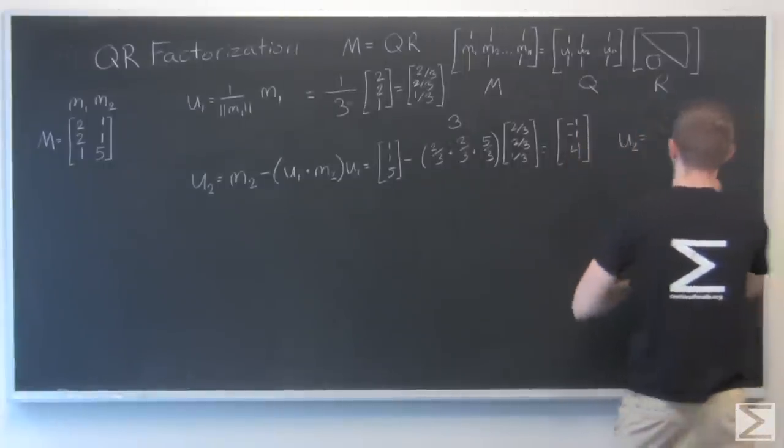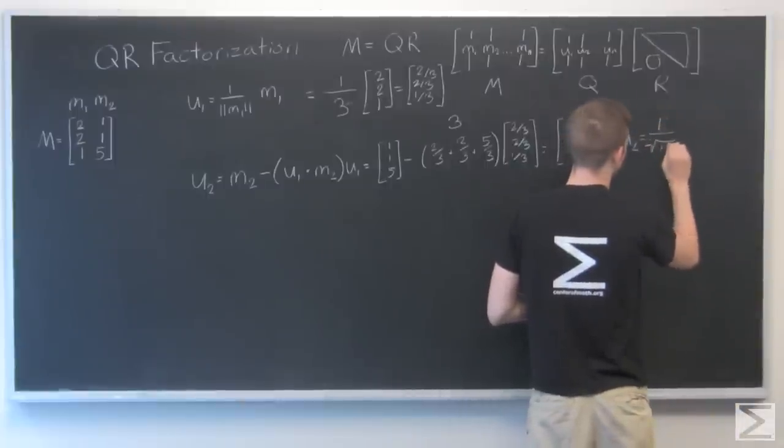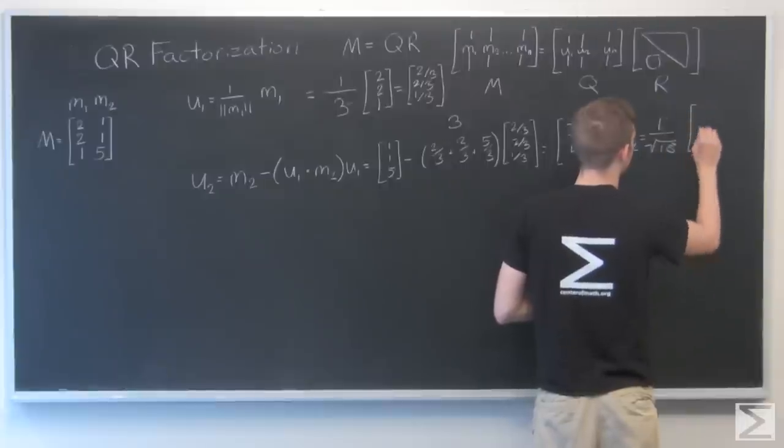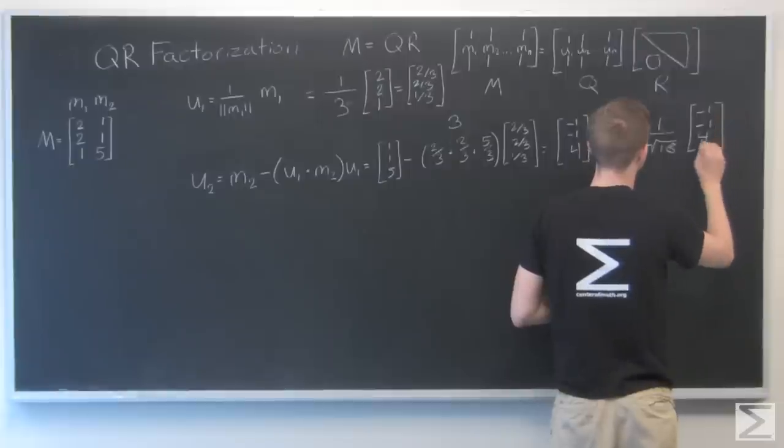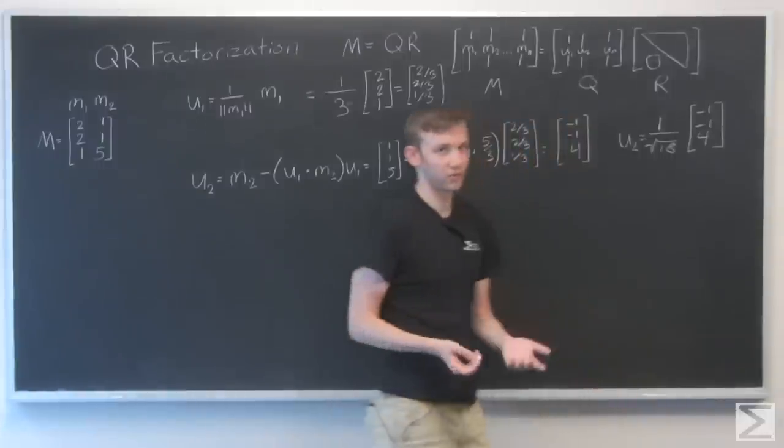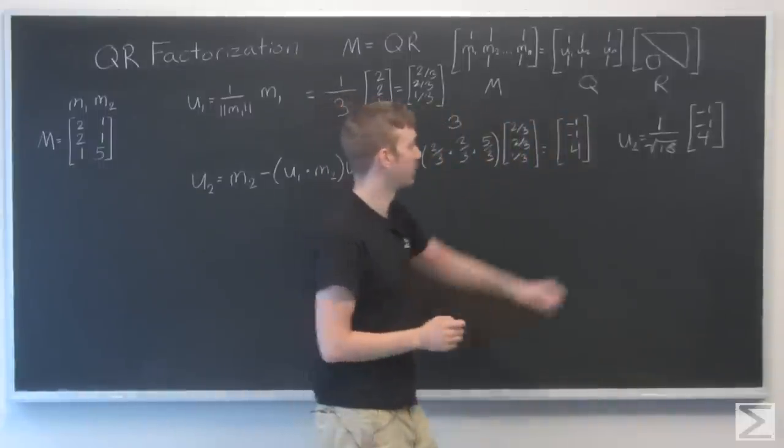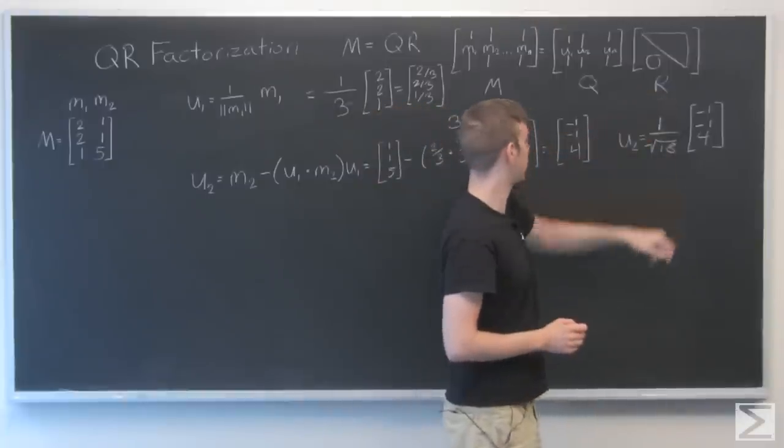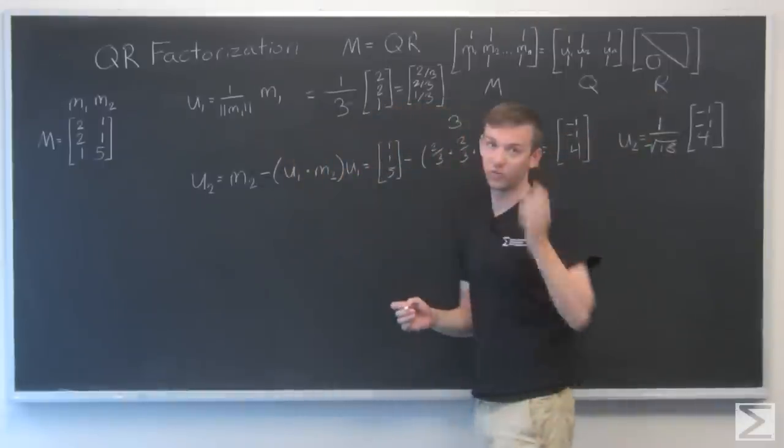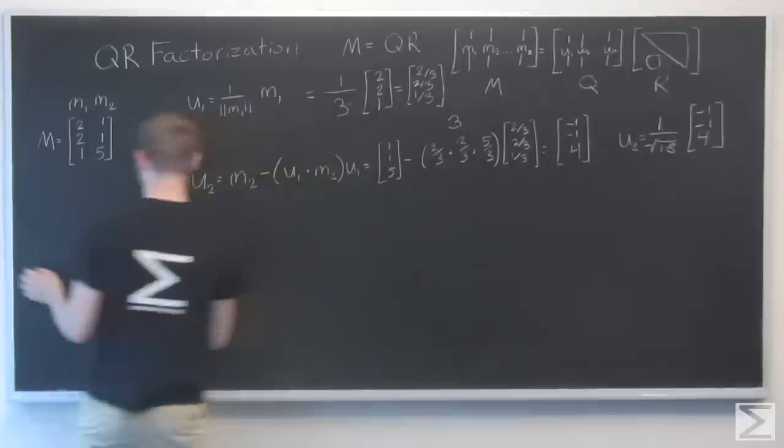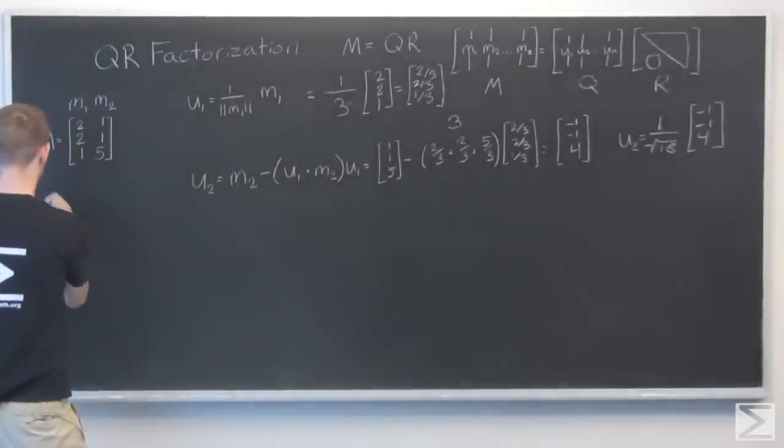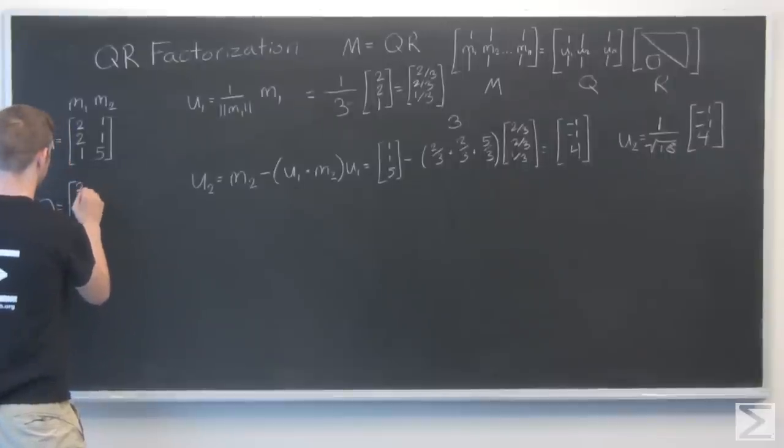So, the square root of 18 times [-1, -1, 4]. Unfortunately, when you're doing Gram-Schmidt or QR factorization, you do get a lot of square roots because we're dealing with unit vectors. So that is my u2, that is my u1. I can now write my Q.